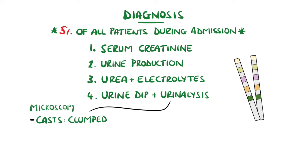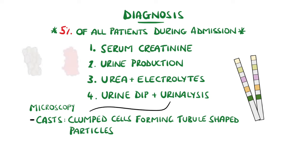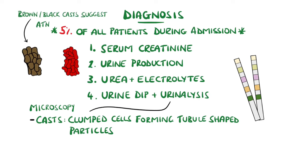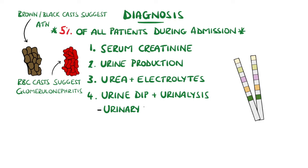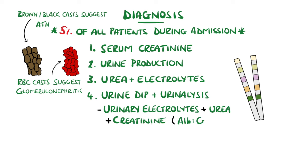Urinalysis looks for casts, which are small tube-shaped particles. Casts made up of brown or black pigment may indicate acute tubular necrosis, made from necrosed epithelial cells, while red blood cell casts may indicate glomerulonephritis, and white blood cell casts may indicate acute interstitial nephritis. Urinary concentrations of electrolytes, creatinine, and urea can also help differentiate the primary cause. However, electrolyte concentrations can often be altered by diuretic use.